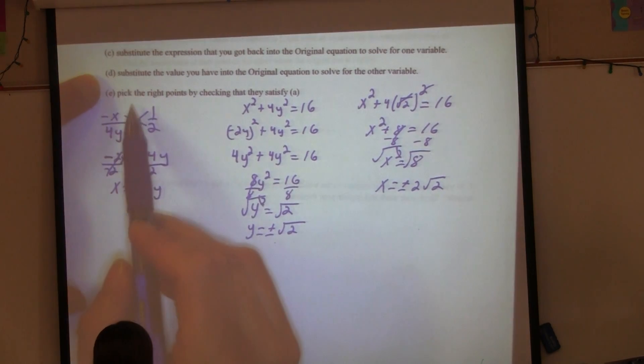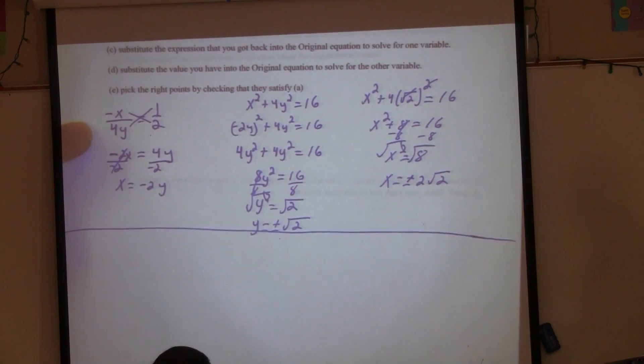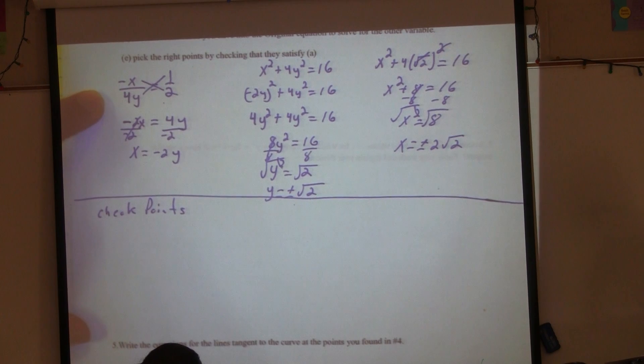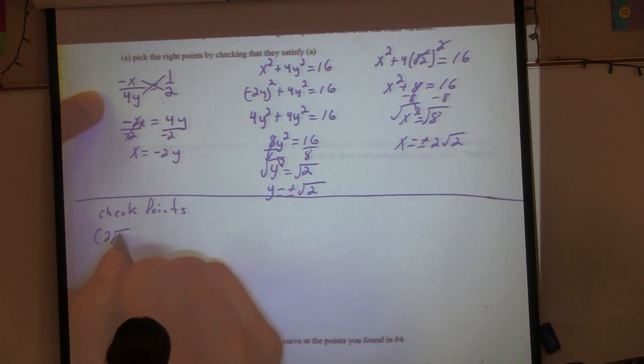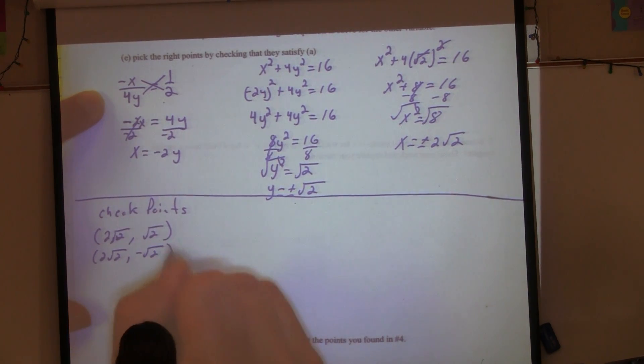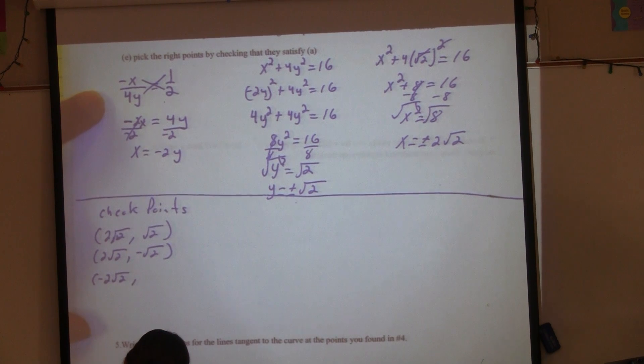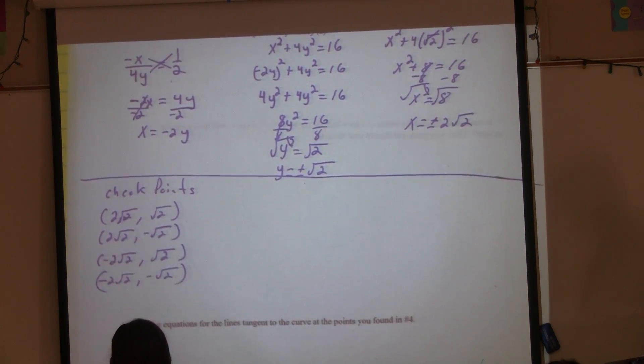The next part is to pick the right points by checking that they satisfy part A. So sometimes we automatically assume that these points should work out and should be the ones that give us the correct answer. That's not always the case. This last part is very important. You have to check your points.